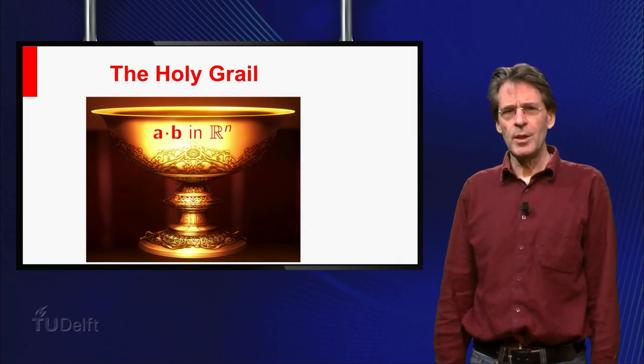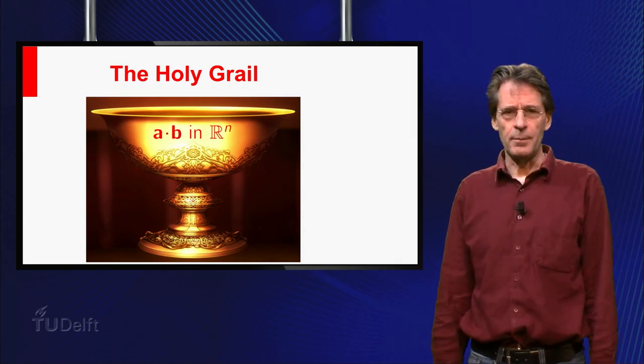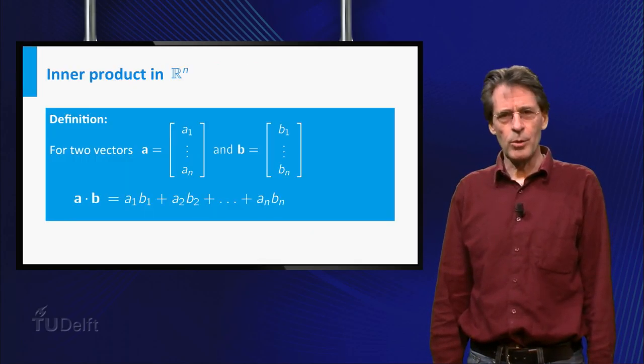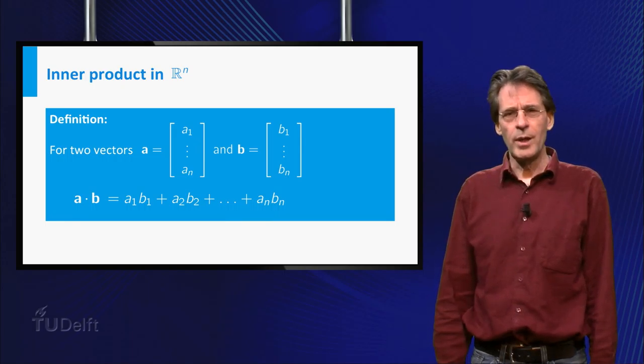Once we have this, we can define the geometry in Rn. The inner product of two vectors a and b in Rn is defined as a1 b1 plus a2 b2 etc. up to an bn.